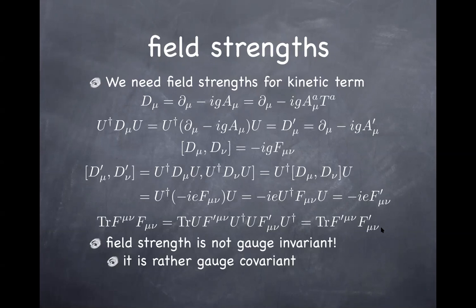Student question: why use the trace and not some other operation like a determinant? The determinant is also gauge invariant because det(U†) and det(U) cancel. However, for an n×n matrix, the determinant is degree n in the components, making it a non-renormalizable term. That's why we use the trace instead of the determinant.